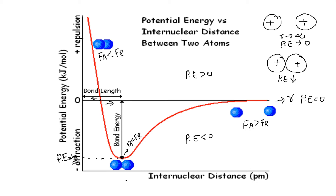At the equilibrium point, force of attraction and force of repulsion are balanced. To the left of this point, force of repulsion dominates, and to the right of this point, force of attraction dominates.